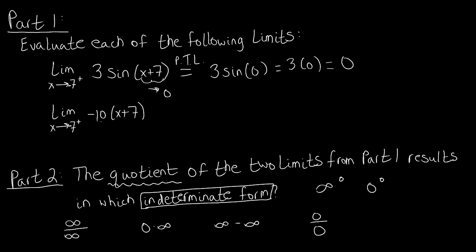Now looking at the second limit, we have negative 10 times (x + 7). The same argument applies: as x approaches negative 7 from the right, the sum (x + 7) grows closer to 0. So passing to the limit gives us negative 10 times 0, which is 0. Both of our limits evaluated to be 0.